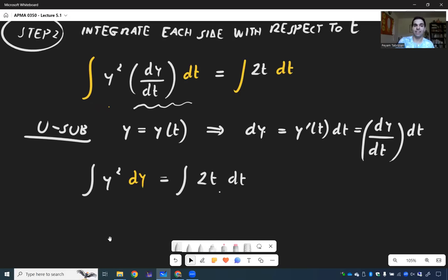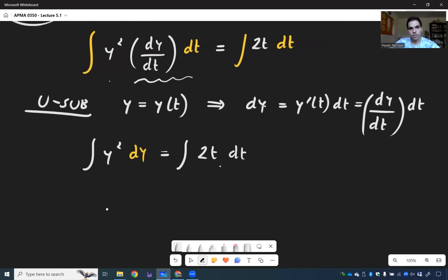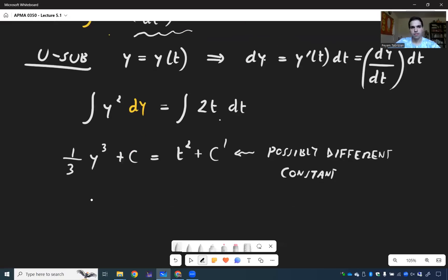And now we can find antiderivatives. So this becomes one third y cubed plus a constant and then t squared. Now usually you put plus c, but careful, the second constant might be different from the first one. So we put c prime, just to emphasize that it's possibly a different constant.